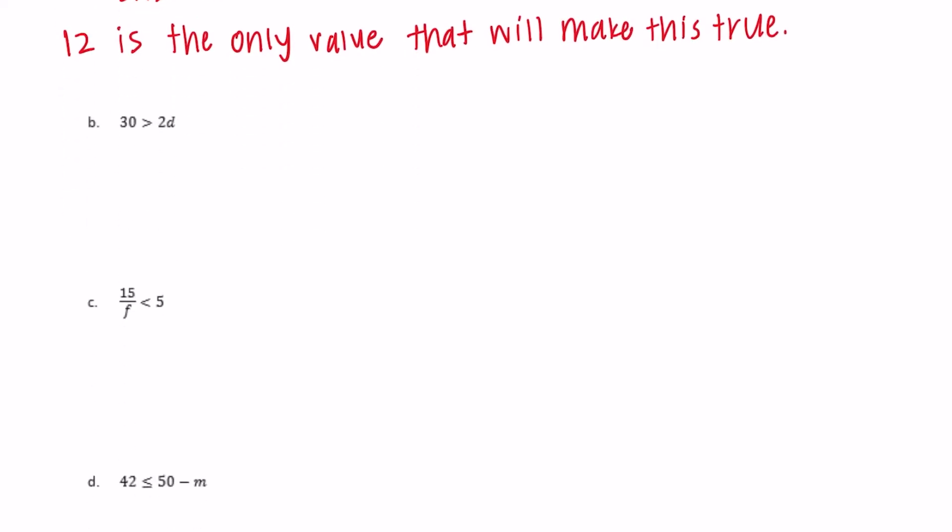B, 30 is greater than 2D or 2 times D. So let's start, I always like to start by making them equal because then I have a starting point in my mind.